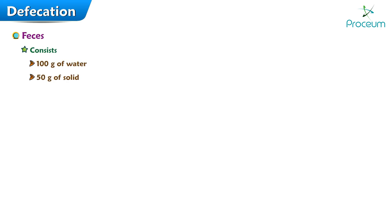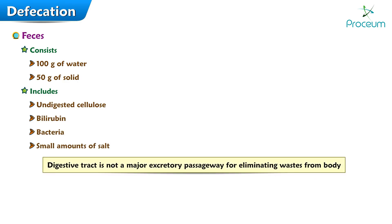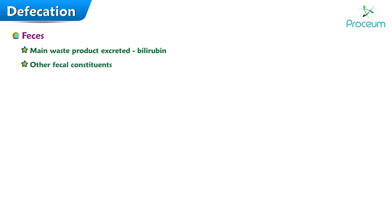Fecal solids include undigested cellulose, bilirubin, bacteria, and small amounts of salt. Contrary to popular thinking, the digestive tract is not a major excretory passageway for eliminating waste from the body. The main waste product excreted in the feces is bilirubin; the other fecal constituents are unabsorbed food residues and bacteria, which were never actually a part of the body.